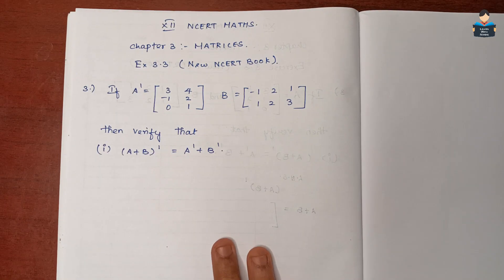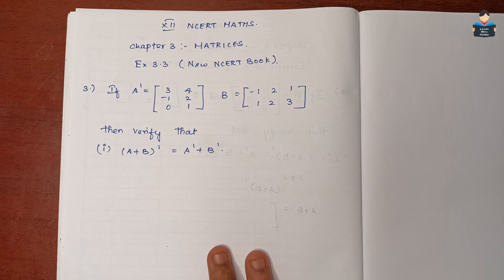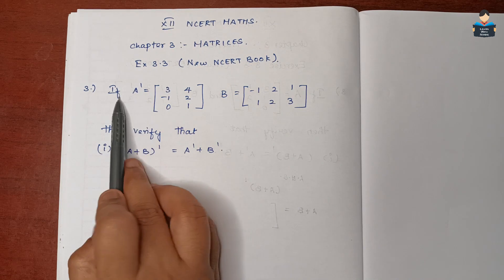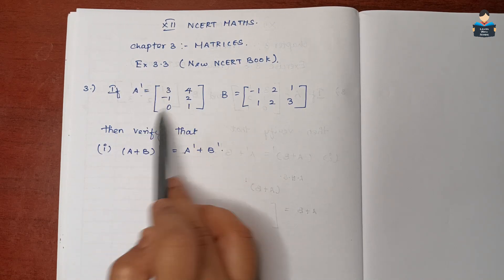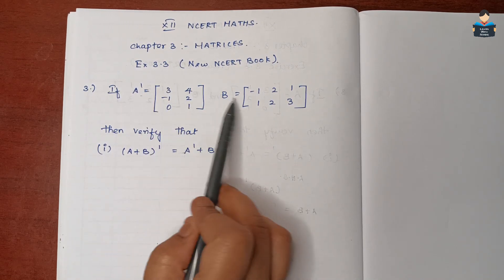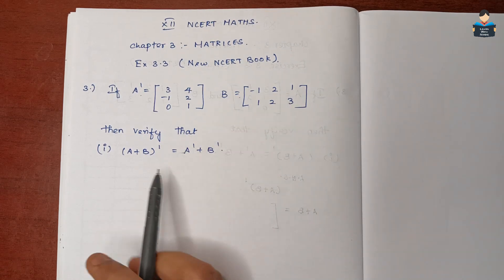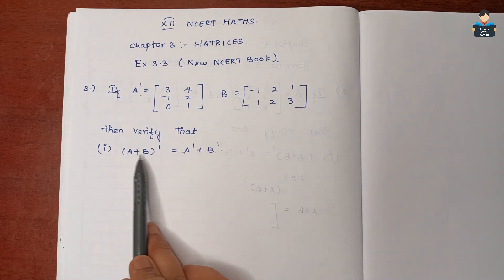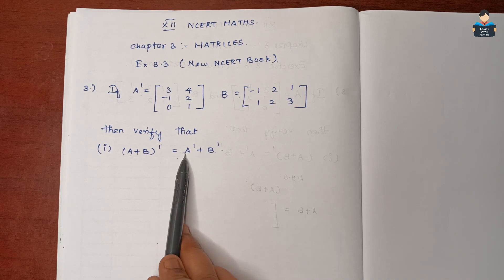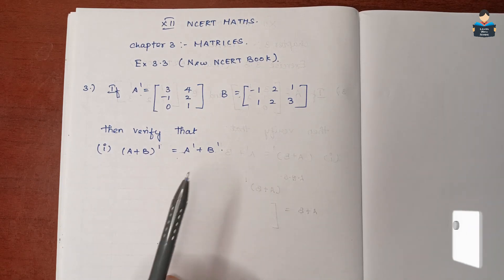Hello everyone, welcome to our channel. In this video we will solve NCERT Maths Chapter 3 Matrices, Exercise 3.3, 3rd sum. Given A transpose matrix and B, verify that (A+B) transpose equals A transpose plus B transpose.